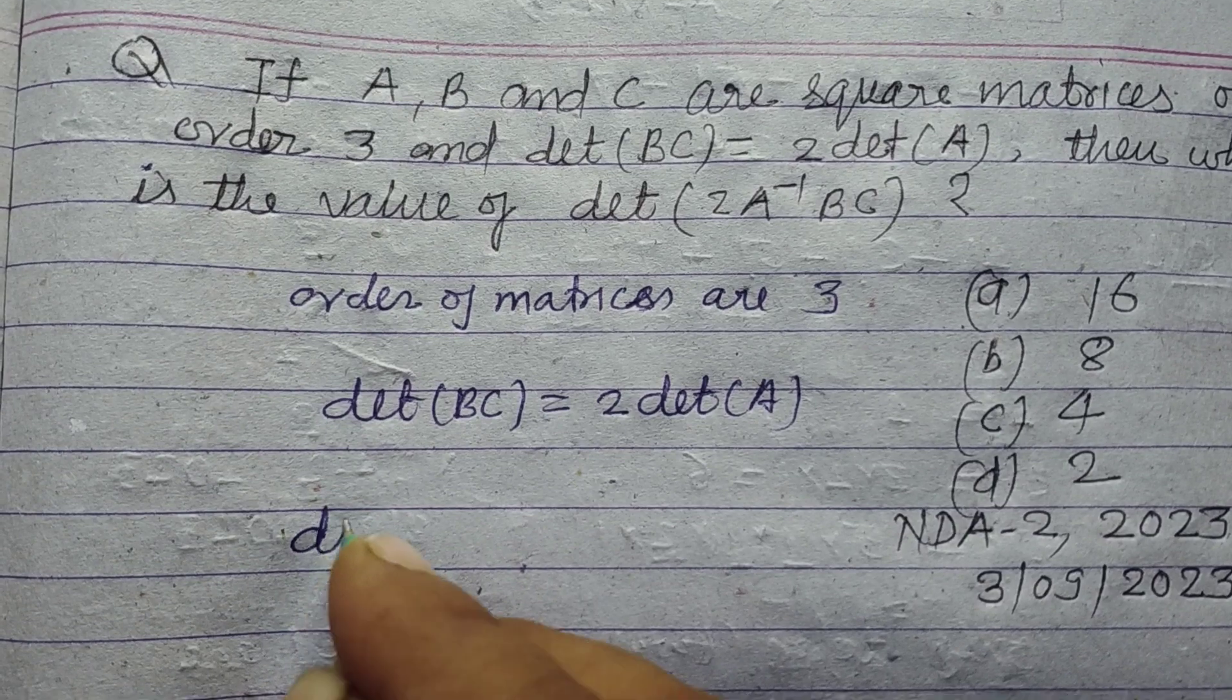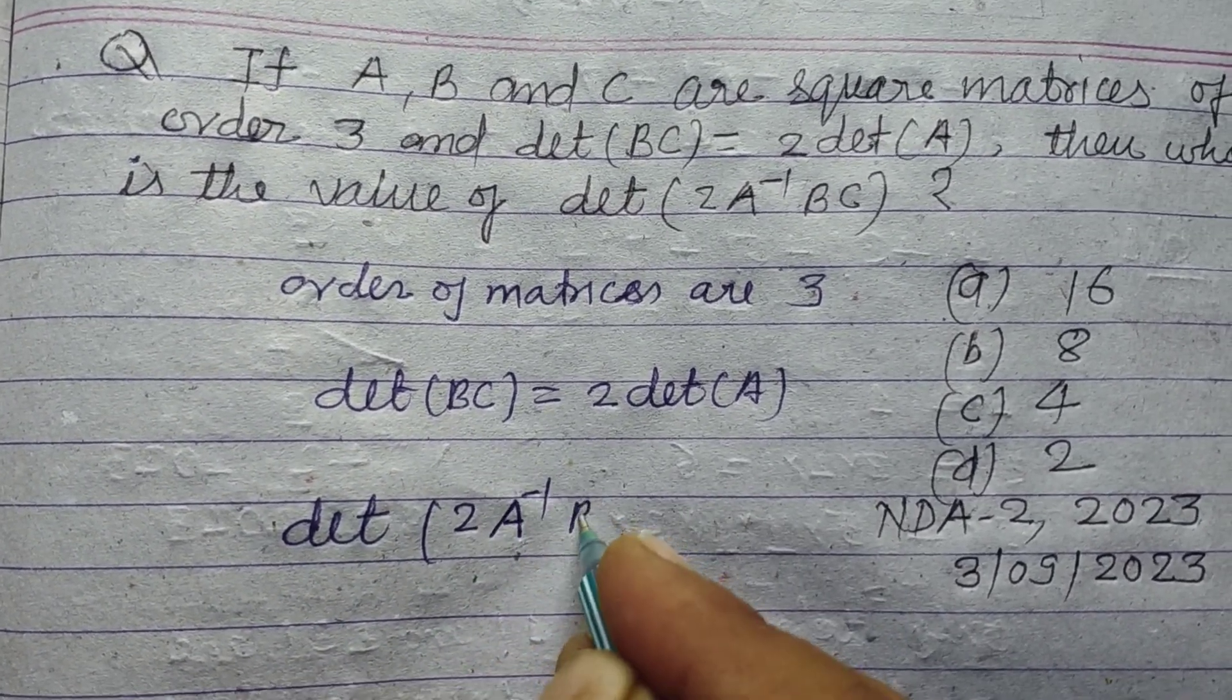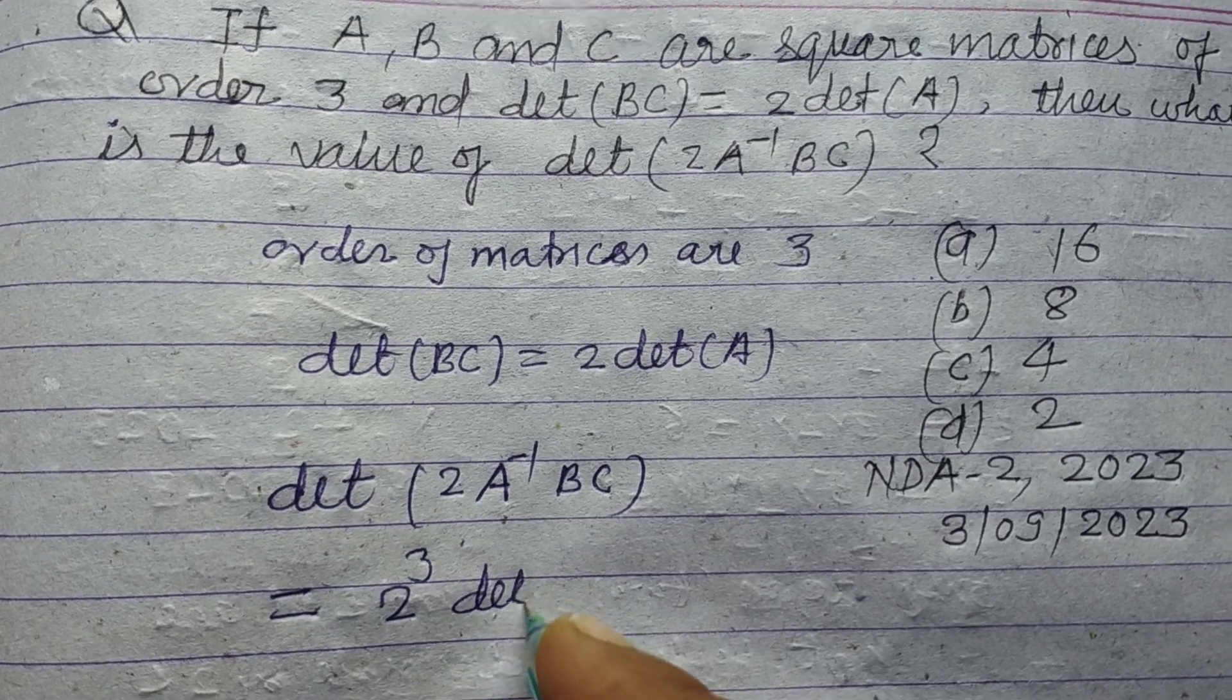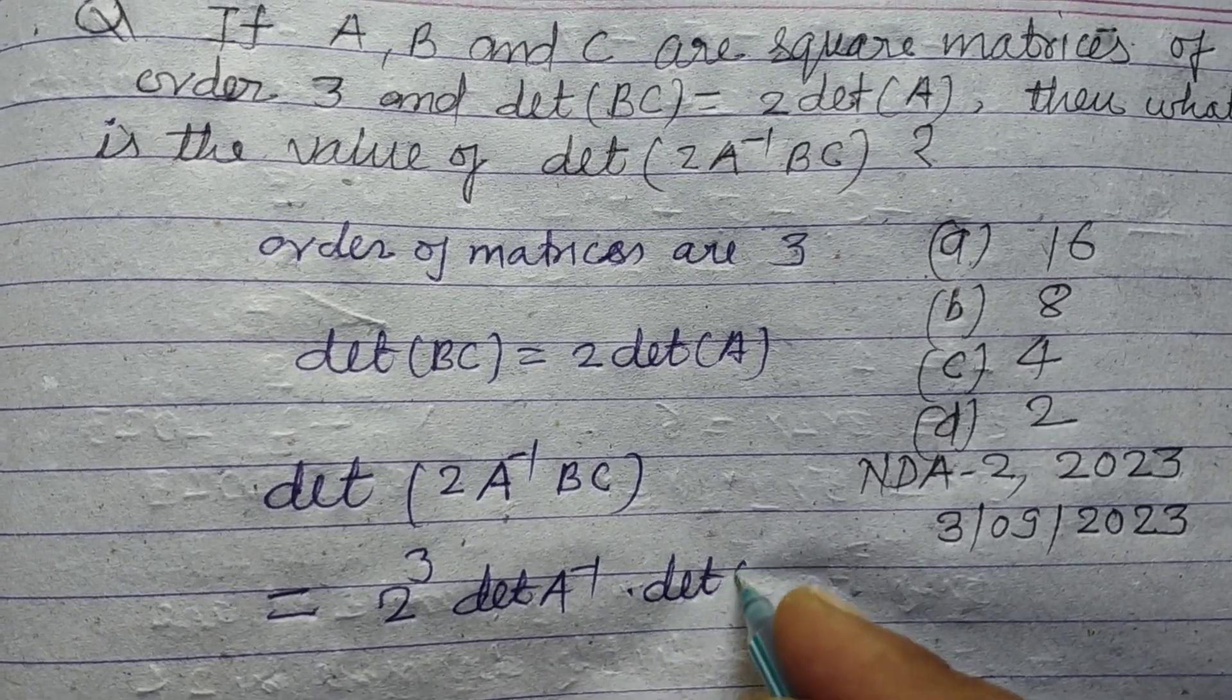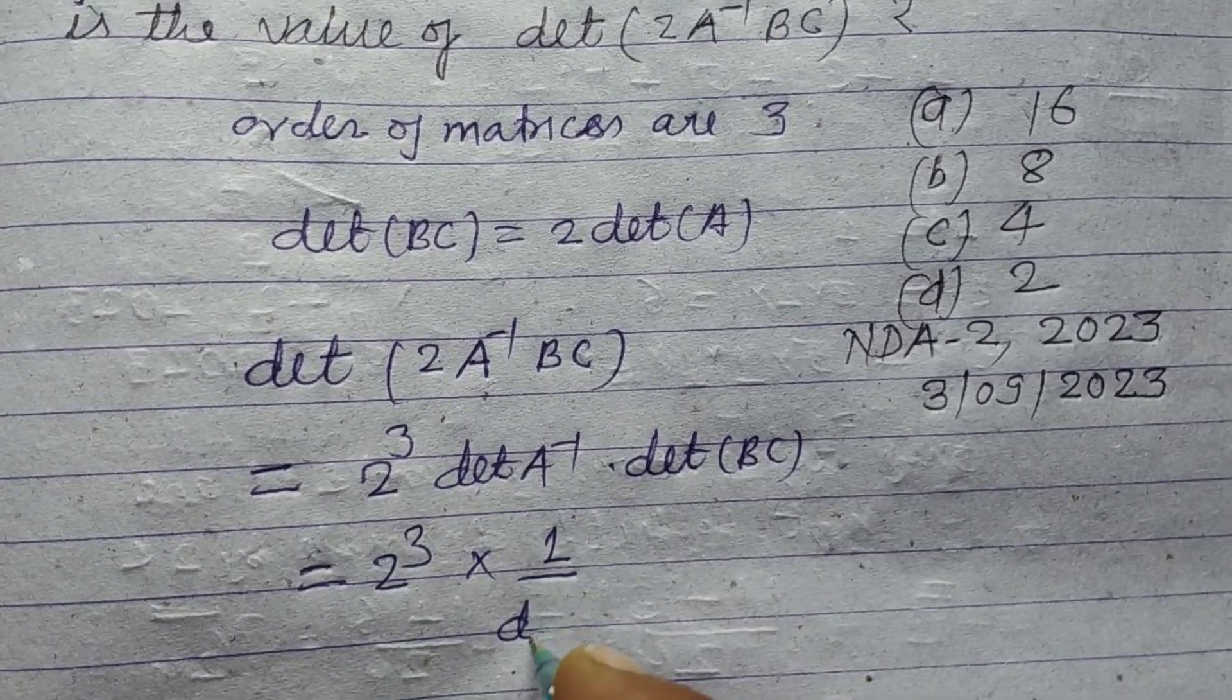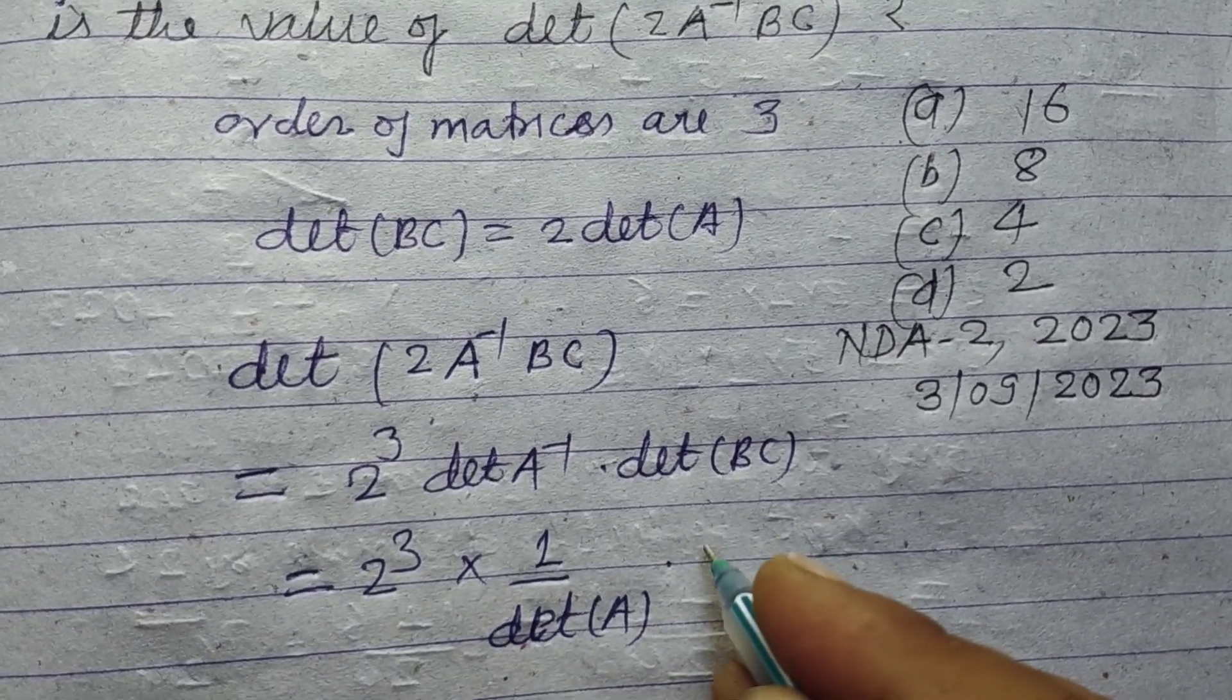For determinant of 2A inverse BC, since the order is 3, we write 2 to the power 3 times determinant A inverse times determinant BC. This equals 2 cubed times 1 over determinant A times determinant BC.